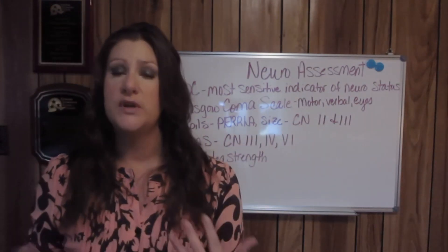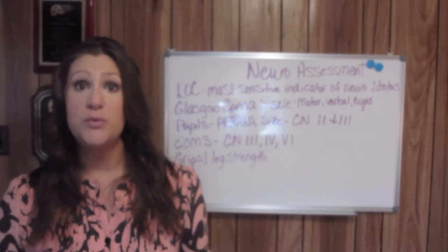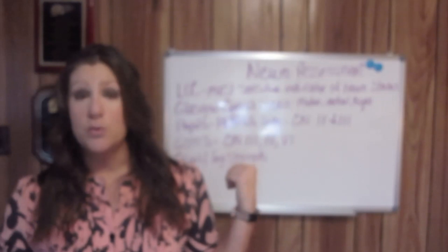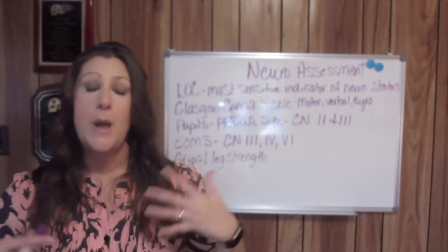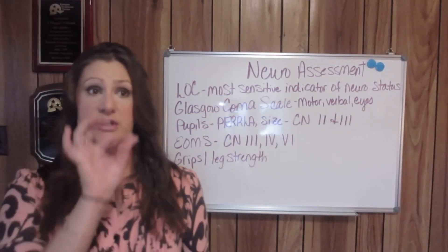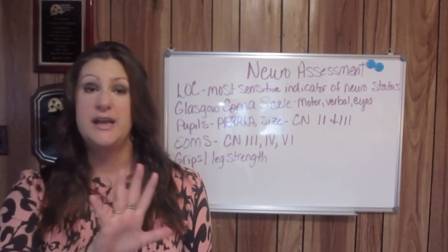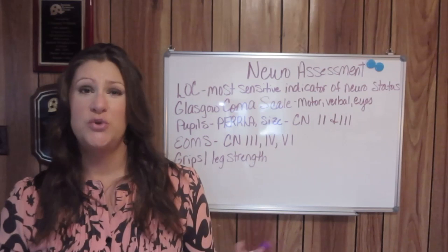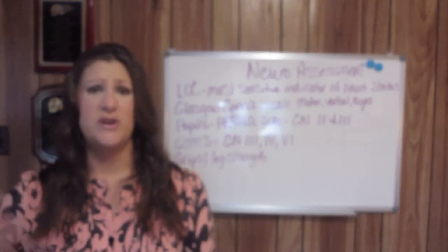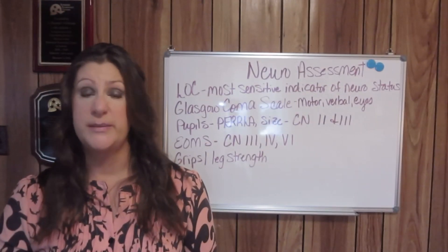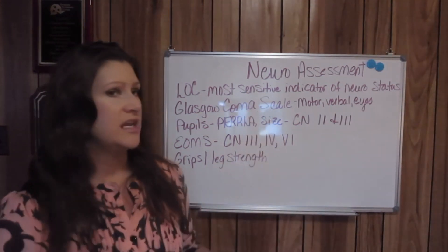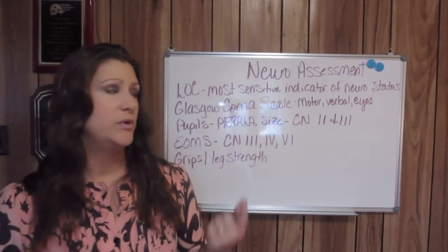Do not forget to document your patient's pupil size. Most patients' pupils are going to be about a 2. A 1 would be very small. Anything larger than a 4 is really dilated — they may have had some medication that left their pupils dilated. Always document the size of your patient's pupils when you are checking PERLA.